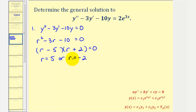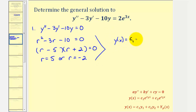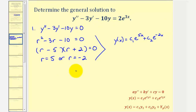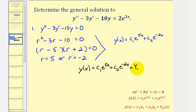These roots help us find the general solution to the homogeneous differential equation. Because we're after the solutions to the non-homogeneous differential equation, this solution gives us the first two terms in our general solution. The solution to the homogeneous equation would be y(x) = c₁e^(5x) + c₂e^(-2x), which means for the general solution to the non-homogeneous differential equation, we have y(x) = c₁e^(5x) + c₂e^(-2x) + Yp, where Yp is a particular solution.